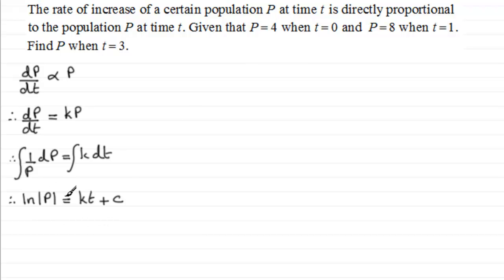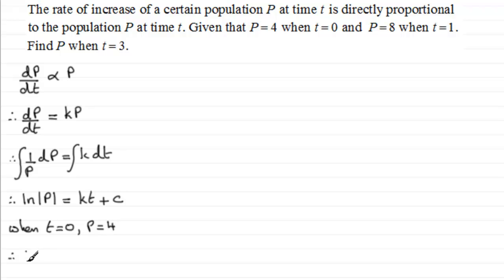To work out the constants, we look at the initial conditions. Taking the first condition — when t equals 0, p equals 4 — and substituting into our equation, we get the natural log of 4 equals k times 0 plus C. So C equals the natural log of 4.